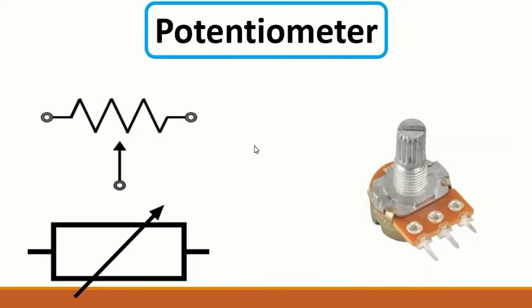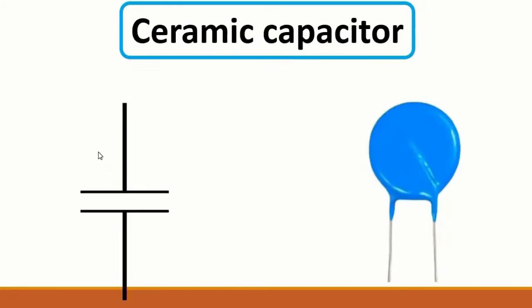Then we have the potentiometer - a variable resistor component that we can use to adjust resistance. Its symbol could be one of two forms, but one is the more frequently used symbol.